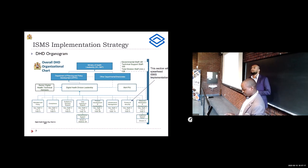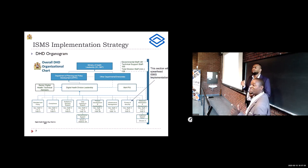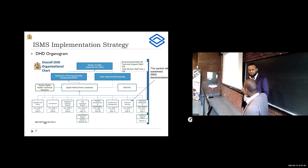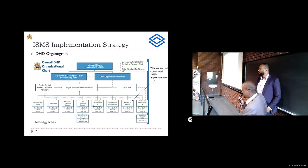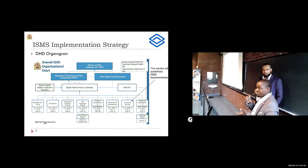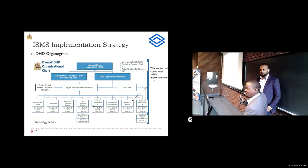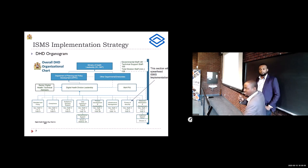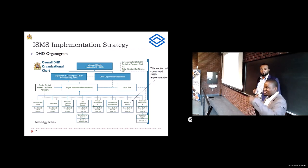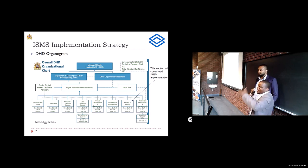Regarding accreditation: we sent officers to the British Standards Institute for one week to go through the ISO 27001 implementation requirements. From there, action points were drawn up for moving forward. It's a cycle — status reviews, continuous improvement, meetings, risk assessments, and ongoing improvement.